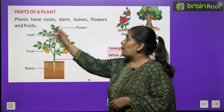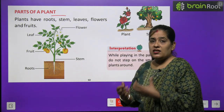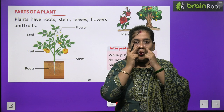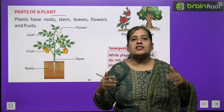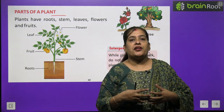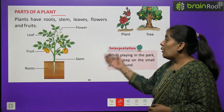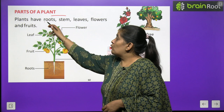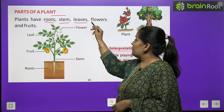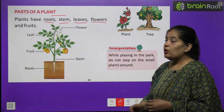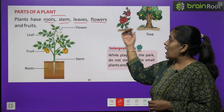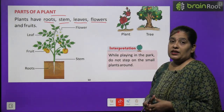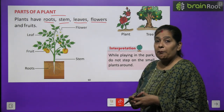Now we will learn about parts of plants. हमारे अलग-अलग body parts होते हैं — eyes, nose, ear, fingers — यह सब हमारे body parts हैं। उसी तरह पौधों के भी different parts होते हैं। Plants have root, stem, leaves, flowers and fruit. पौधों की जड़, तना, पत्ती, फूल और फल होते हैं — यह सब पौधों के भाग हैं।